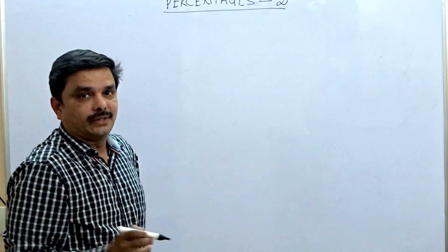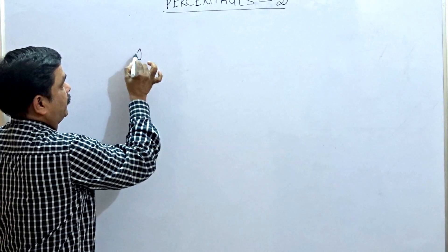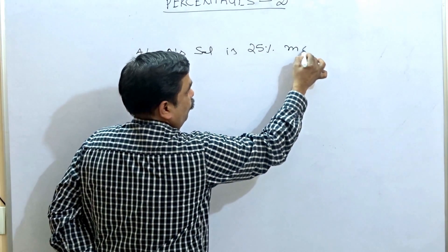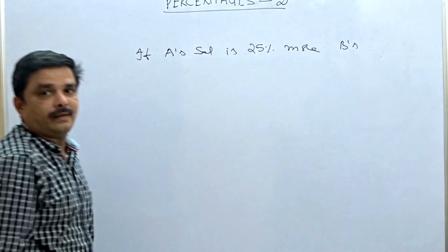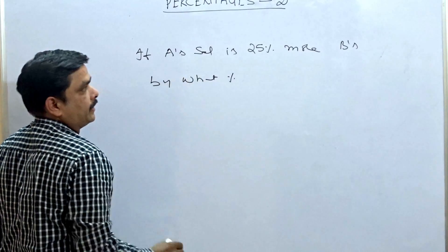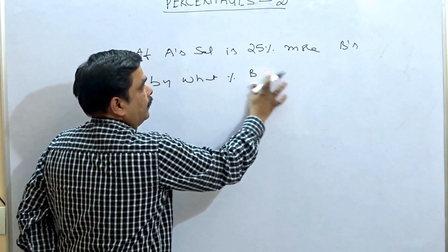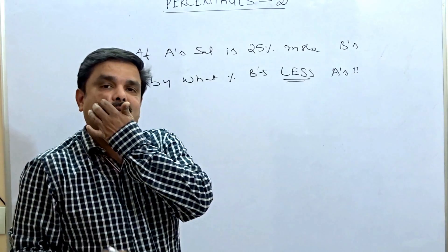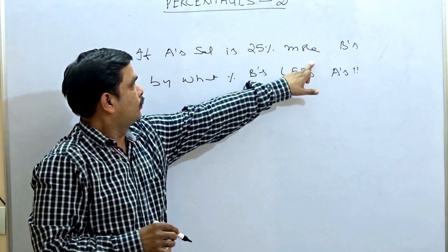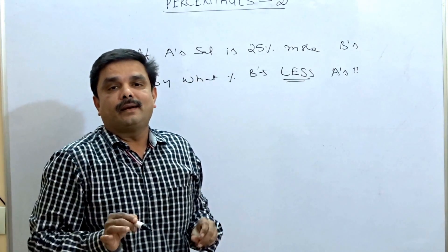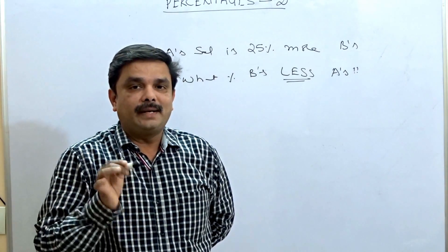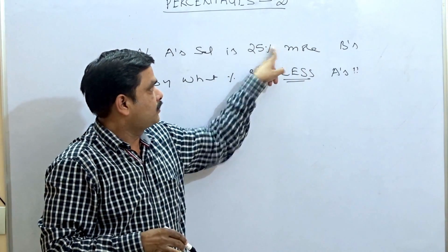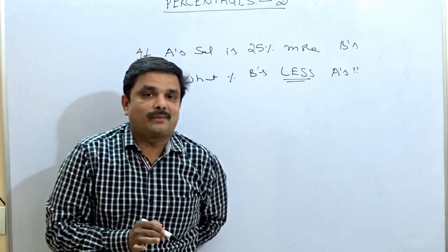In the last session we started this question: if A's salary is 25% more than that of B's salary, then by what percent is B's salary less than that of A's? Some students may confuse this by concluding that when A's salary is 25% more than B's, then B's salary is also correspondingly 25% less than A's. That is the wrong conclusion.